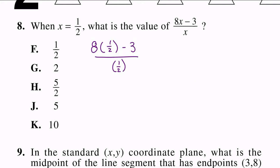Moving back to our actual question, we can do 8 times 1/2, which is the same as 8 times 0.5. So that's 4 - 3 divided by 1/2, and that's 1 divided by 1/2.